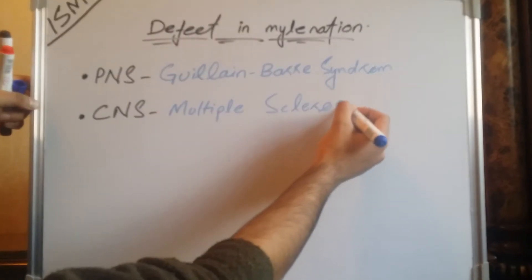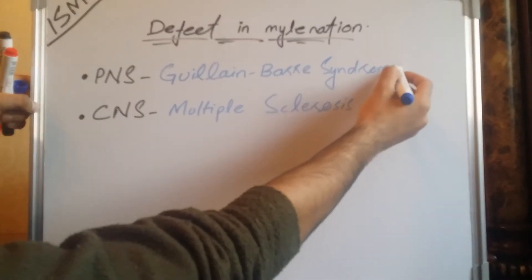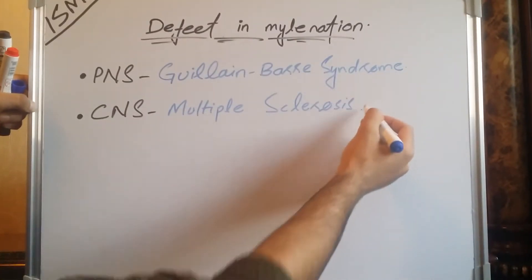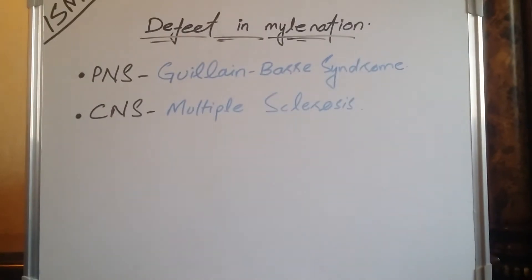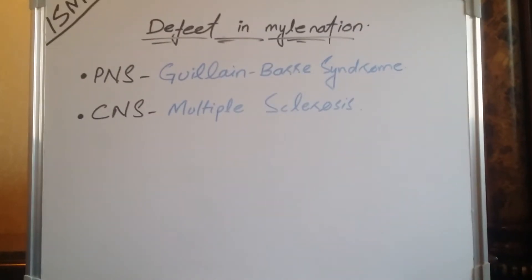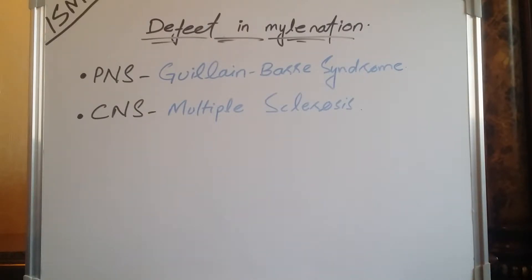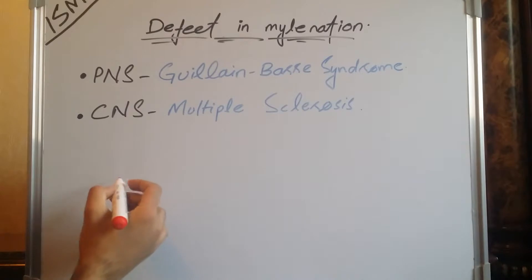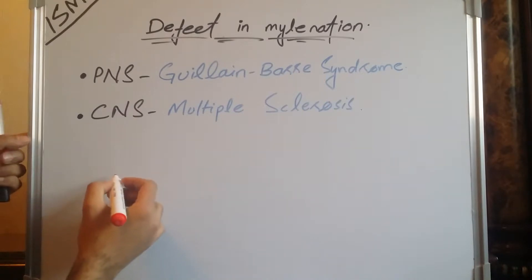Sclerosis means hardening. So hardening of the neuron means that its conductivity — the process of conduction — becomes decreased, and it becomes stiff to the conduction of impulses.